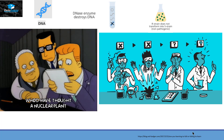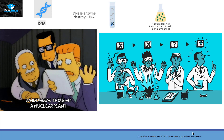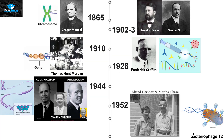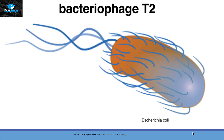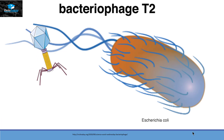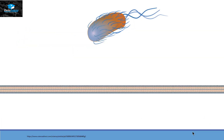So in 1952, two scientists named Alfred Hershey and Martha Chase did the experiment on bacteriophage T2. Bacteriophage is a virus that attacks bacteria, so they land on the surface of the bacteria and then insert something inside.